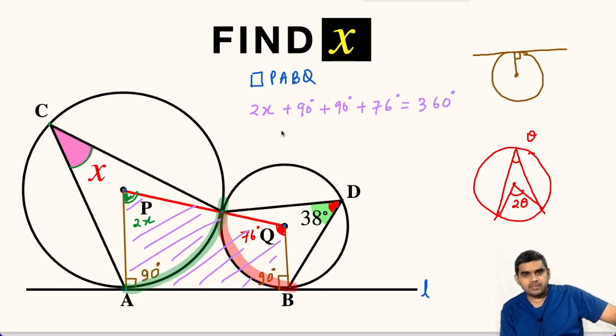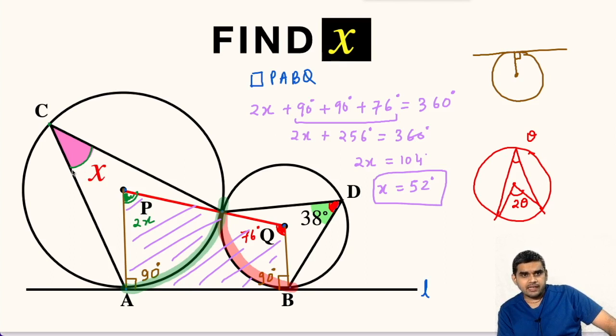So, on simplifying this, we will get 2x plus, if we add all the three angles, this will be 256 degrees is equal to 360 degrees. So, 2x will be 360 minus 256 which is 104 degrees. So, x will be 104 divided by 2, that is 52 degrees. So, the value of angle x is 52 degrees.